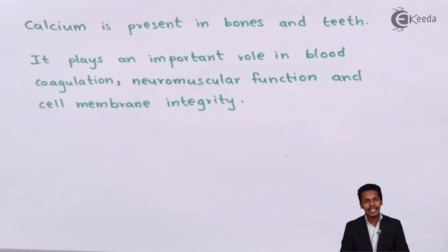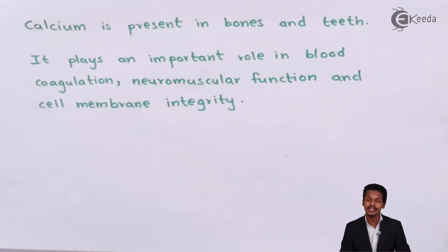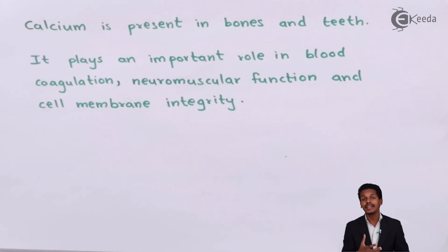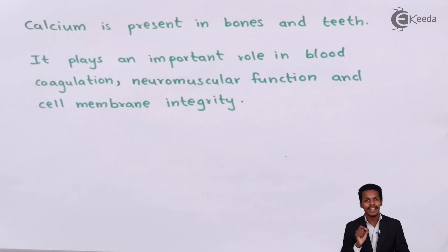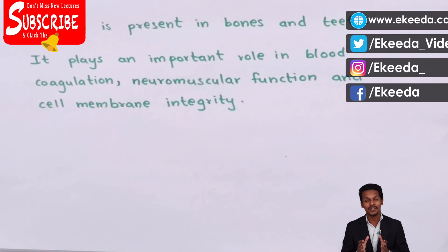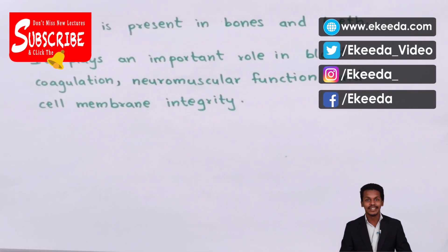Talking about calcium deficiency: since calcium is related to bones and teeth, a deficiency means our bones will get weakened and softened. This kind of problem arising because of the deficiency of calcium is known as osteomalacia. These were the biological importance of calcium and magnesium, and that is how both are needed in our body.